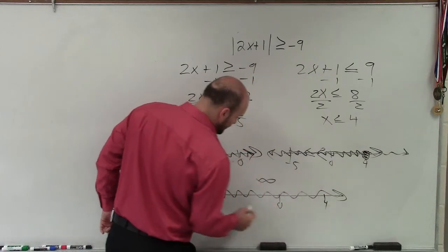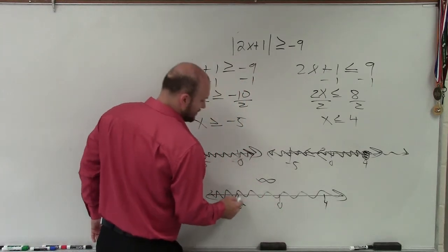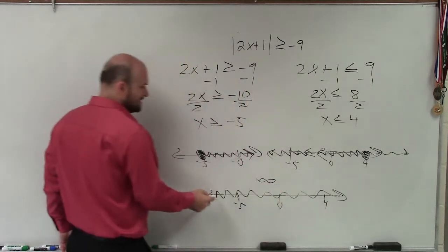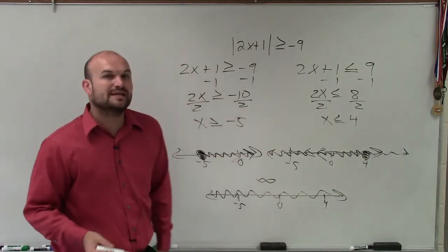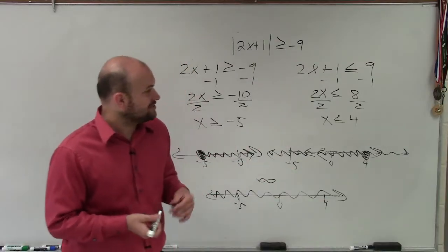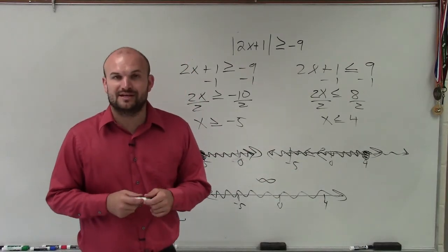If here's 0, here's 4, here's negative 5, I go past negative 5 from this graph, and I go past 4 from this graph. So it's going to be all real solutions. There you go, ladies and gentlemen. That is how you solve your compound inequality. Thanks.